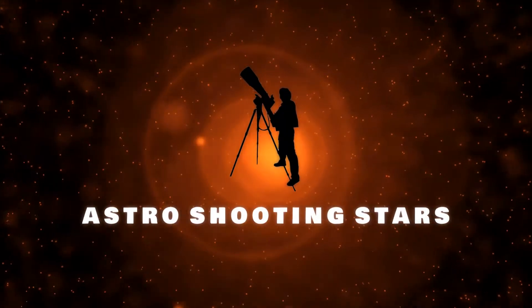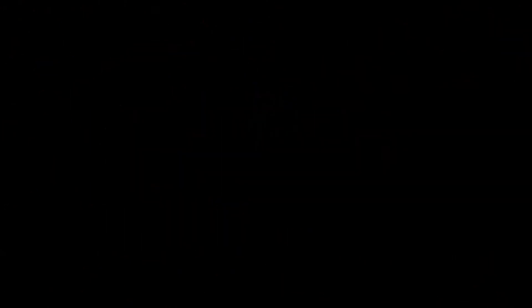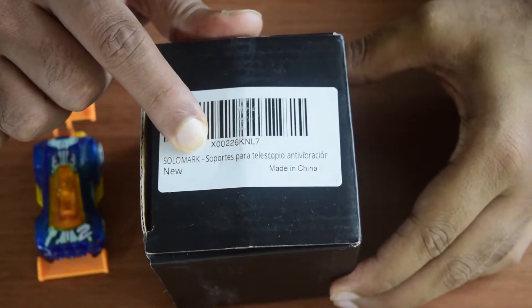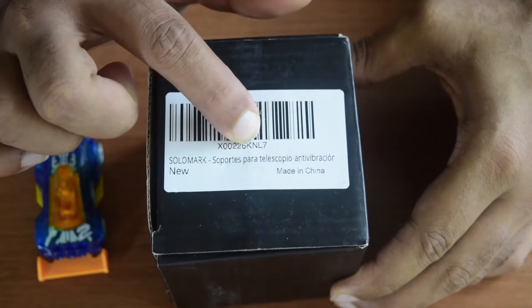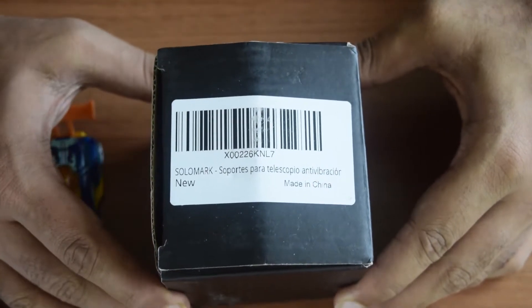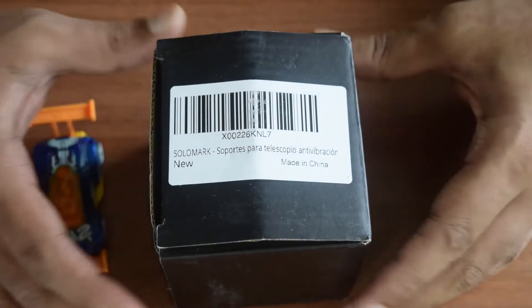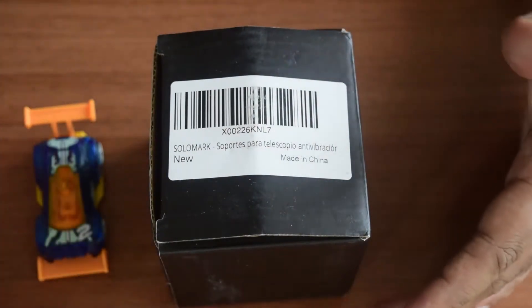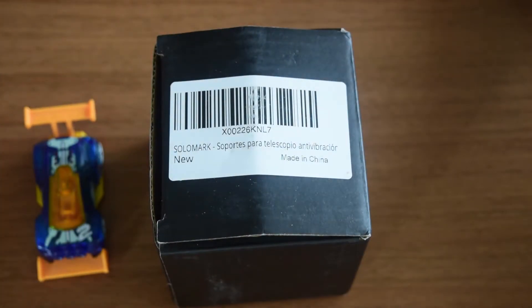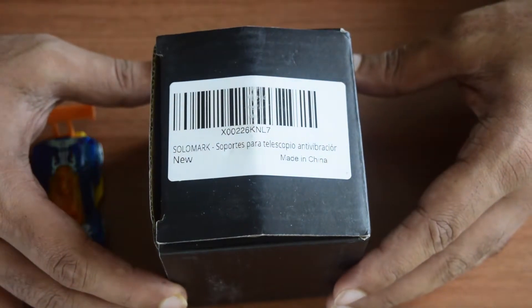Let's get started. So this is the box in which you get your anti-vibration pad. On the top you see it is branded as Solomark; this is the company which manufactures it. This is a support for the telescope tripod. It is used below the tripod legs, which reduces the vibration that is generated on the tripod, or it also reduces the vibration which is generated by the surroundings and prevents it from reaching your telescope.